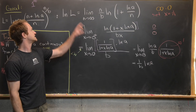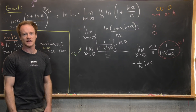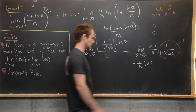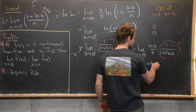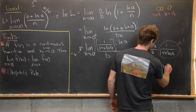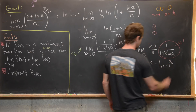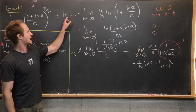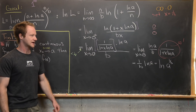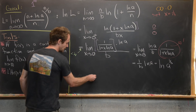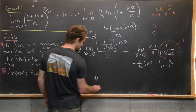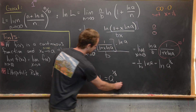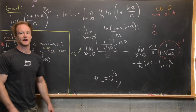Since the left-hand side is ln(L), we use logarithm rules to write the right-hand side as ln(a^(1/b)). Therefore ln(L) = ln(a^(1/b)), which tells us the limit L equals a^(1/b). And that's a good place to stop.